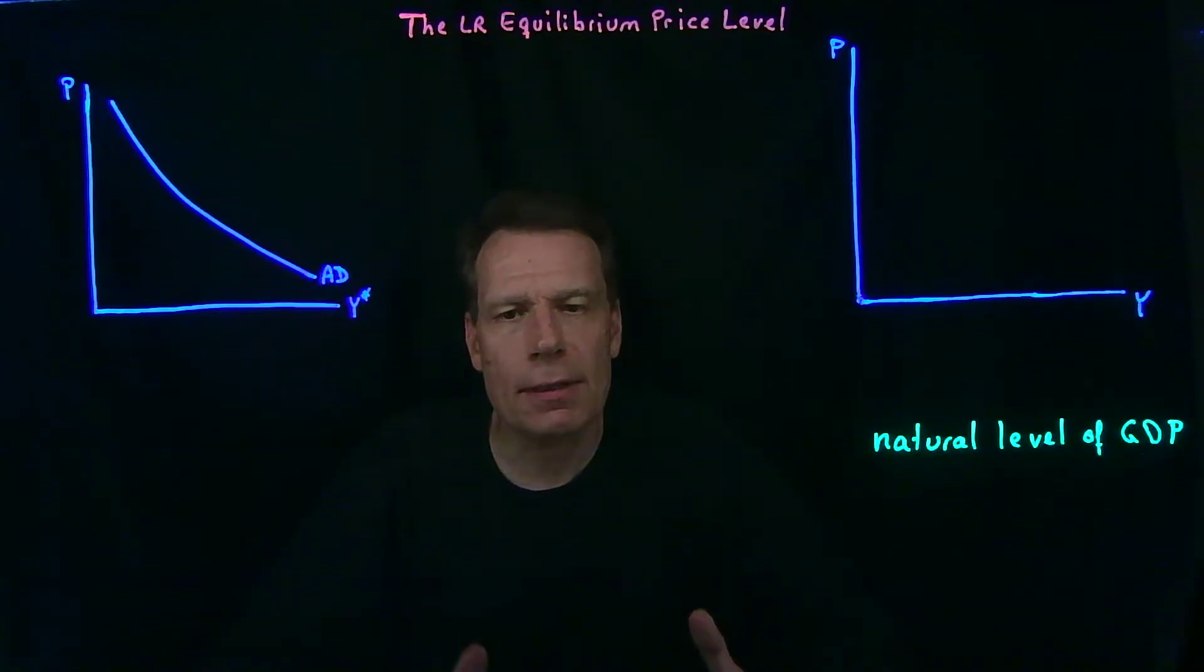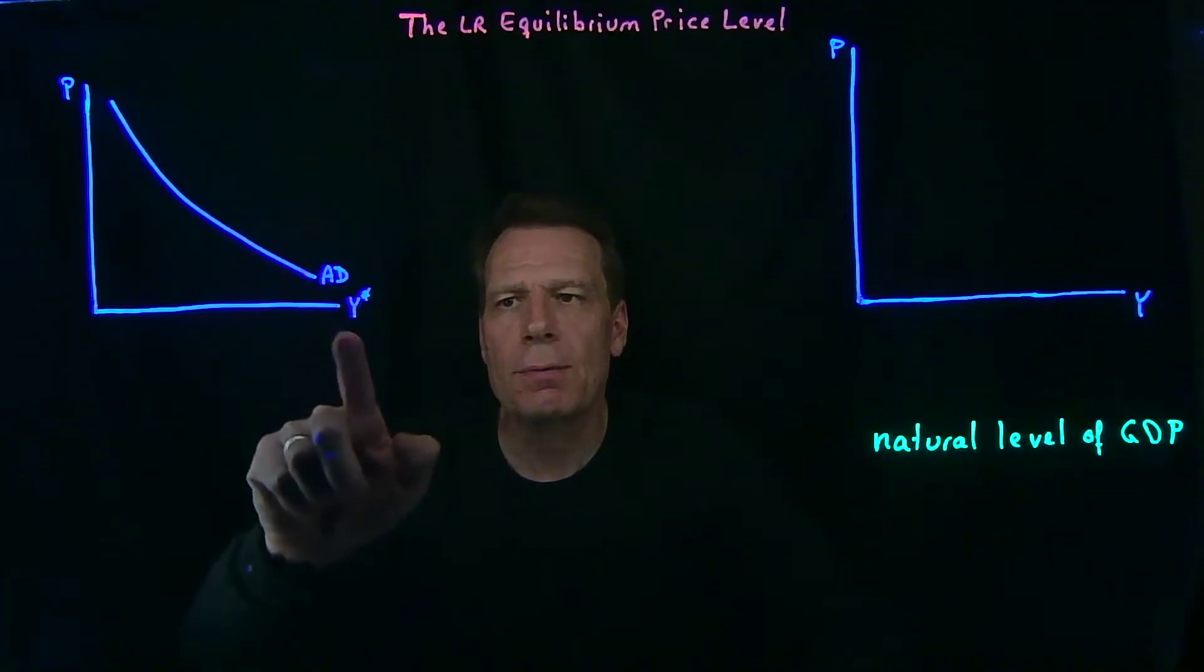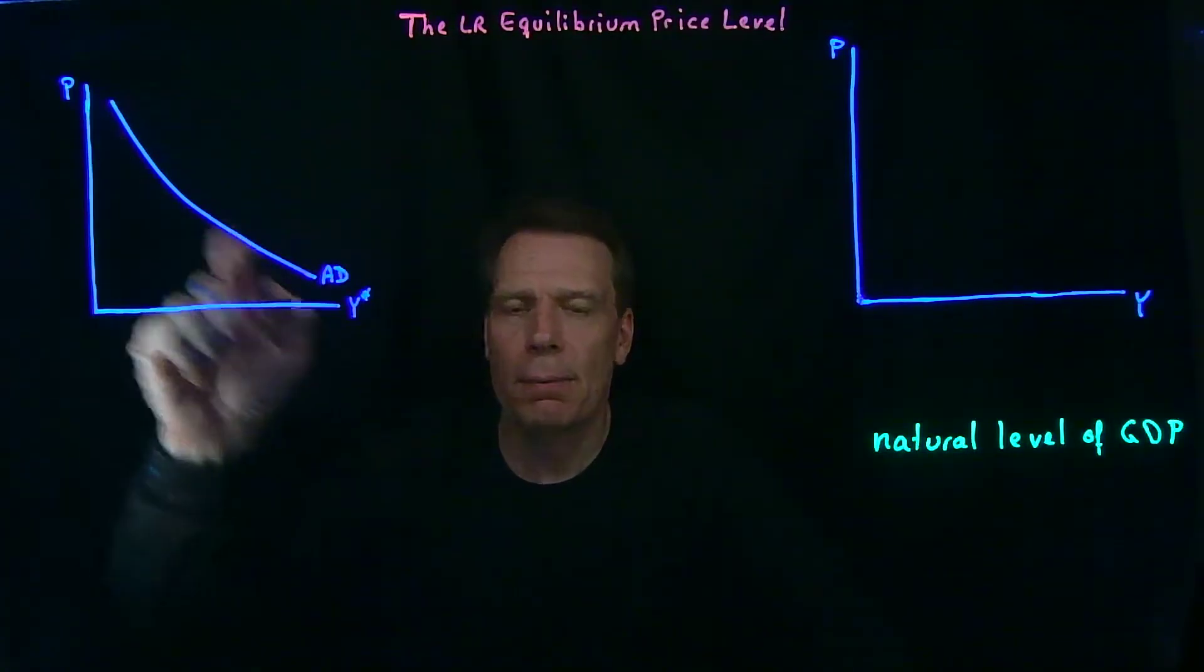We've just derived the aggregate demand curve, the curve that tells us the relationship between the equilibrium level of GDP and the price level.